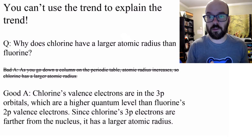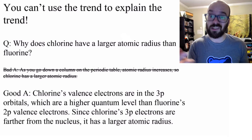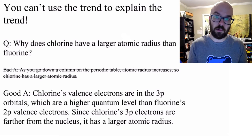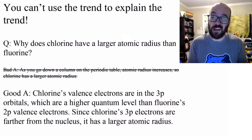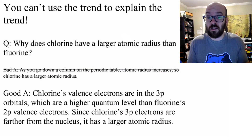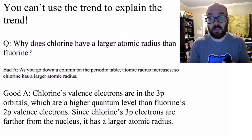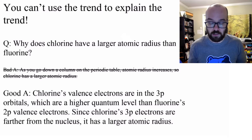One additional thing: the octet rule is a trend. This idea that atoms are most stable if they've got 8 valence electrons — that's just a trend, it doesn't explain anything else. So you can't use the octet rule in our explanations if we're explaining a trend.